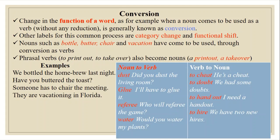Examples of conversion in sentences: 'We bottled the home brew last night.' 'Have you buttered the toast?' 'Someone has to chair the meeting.' 'They are vacationing in Florida.' Noun to verb examples: dust — 'Did you dust the living room?'; glue — 'I will have to glue it'; referee — 'Who will referee the game?'; water — 'Would you water my plants?' Verb to noun examples: to cheat — 'He's a cheat'; doubt — 'We had some doubts'; handout — 'I need a handout'; hire — 'I have two new hires.' These are examples of conversion in English.